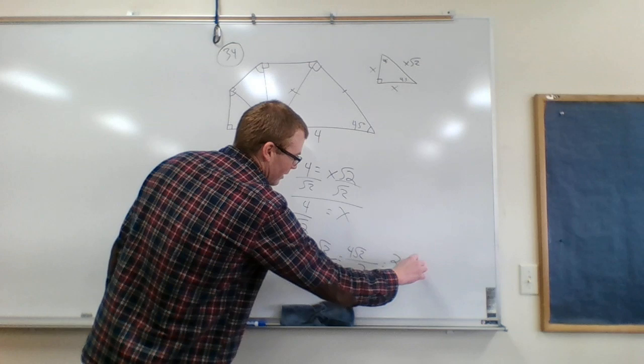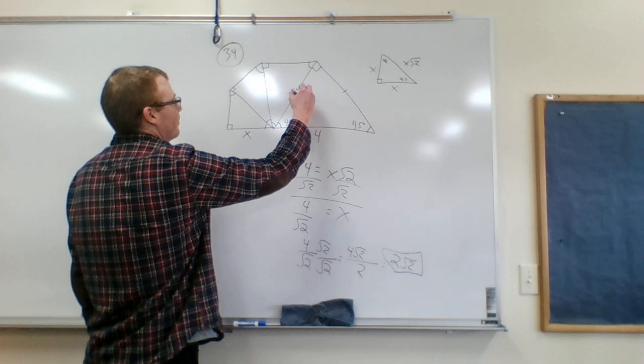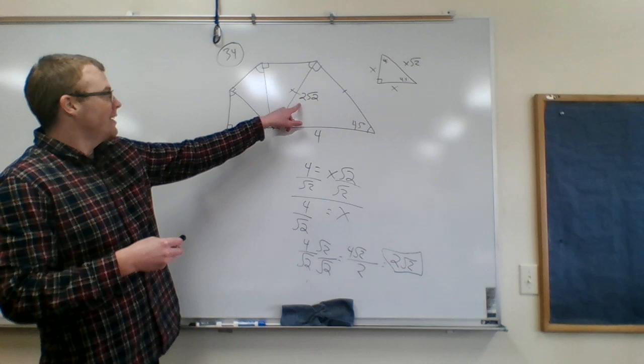Look, 4 over 2 simplifies, so it's just 2 square root of 2. Okay, so this one is 2 square root of 2.